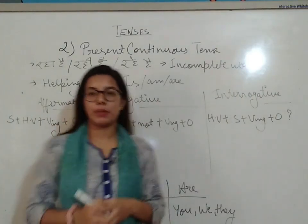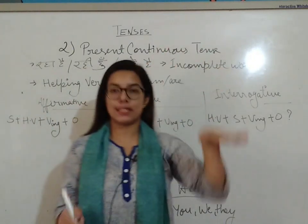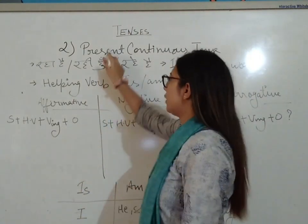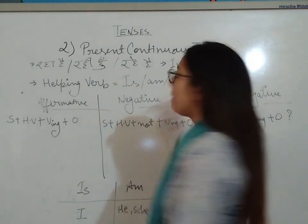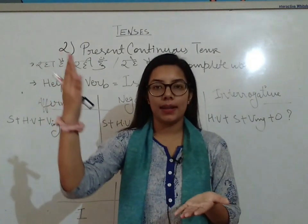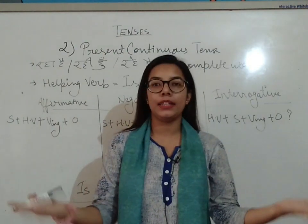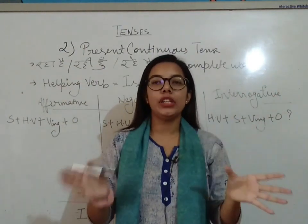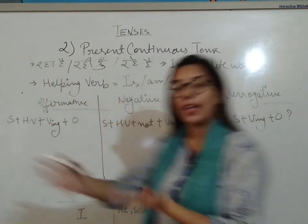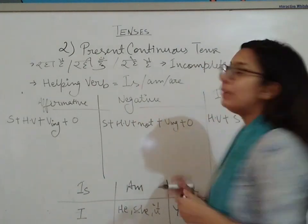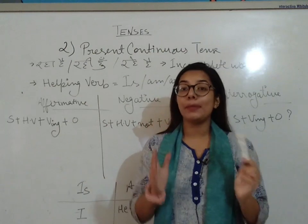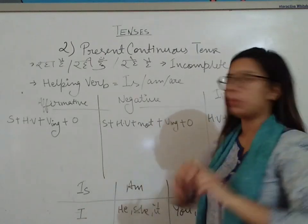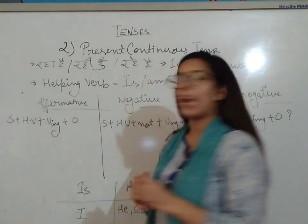Now we come to our second tense: Present Continuous Tense. Present continuous tense is actually very easy. It shows that work is currently going on — the work is in progress right now. For example, 'I am teaching you' — my work is not finished, it is in progress. That's why present continuous tense represents incomplete or ongoing work.